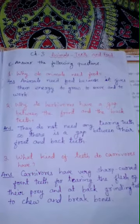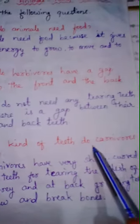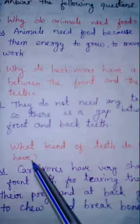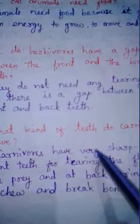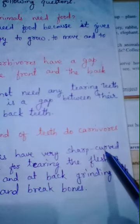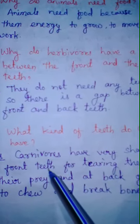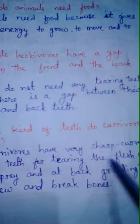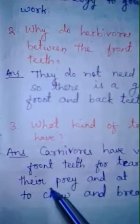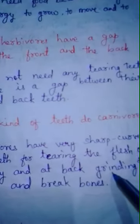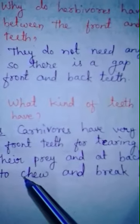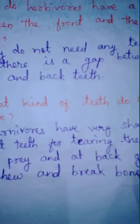Question number 3: What kind of teeth do carnivores have? Your answer is: Carnivores have very sharp curved front teeth for tearing the flesh of their prey, and at the back, grinding teeth to chew and break bones.